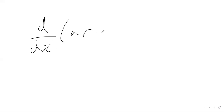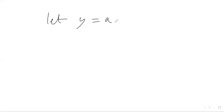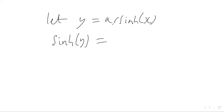Now we want to differentiate arsinh(x). We let y = arsinh(x). We can then apply the sinh function to both sides. Since sinh is the inverse of arsinh, the right-hand side becomes simply x - that is, sinh(arsinh(x)) = x.